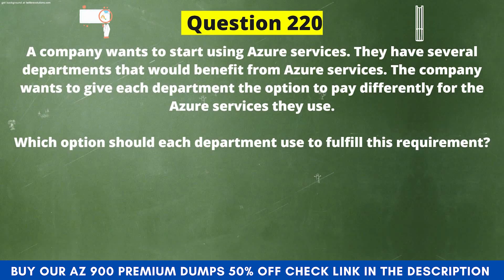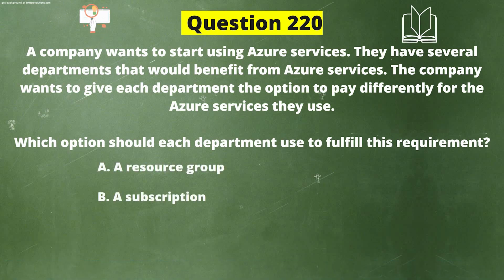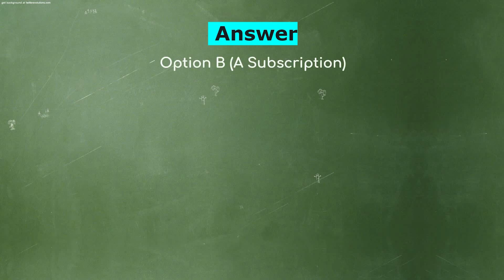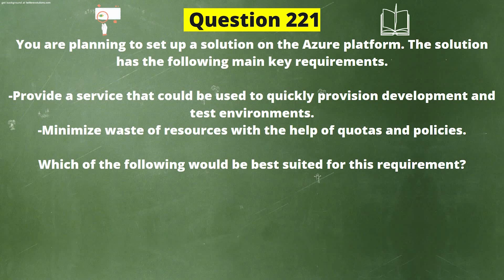Next question: A company wants to start using Azure services across several departments. The company wants to give each department the option to pay differently for the Azure services they use. Which option should each department use? Option A: A Resource Group. Option B: A Subscription. Option C: An Azure Policy. Option D: A Reservation. The correct answer is Option B, A Subscription. An Azure subscription is a logical container used to provision resources; it holds details of all resources like VMs and databases. Billing for Azure resources is tagged to a subscription, so each department can have a different subscription to segregate billing.